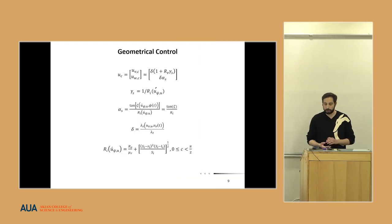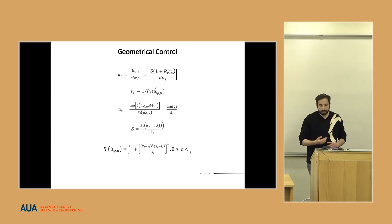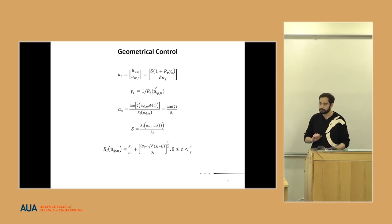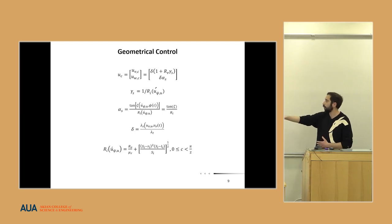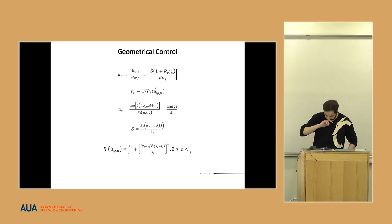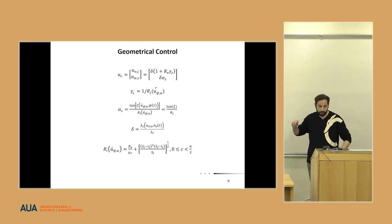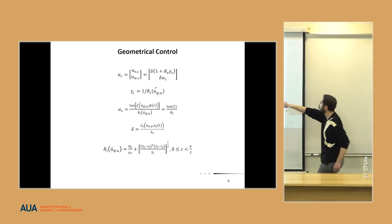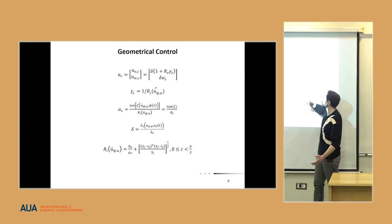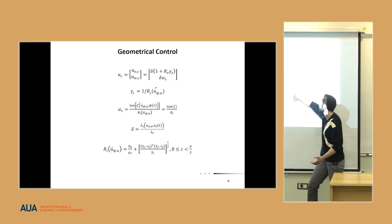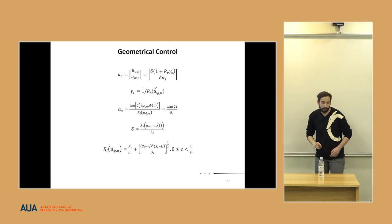Talking about the geometrical controller, as I've already said, it's quite a complicated controller. We won't go deep discussing these equations. With uv, we find our vehicle's velocity, and with uw, we find the angular direction of our vehicle.